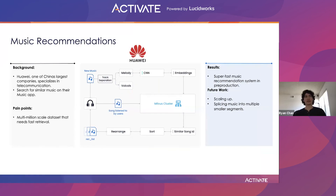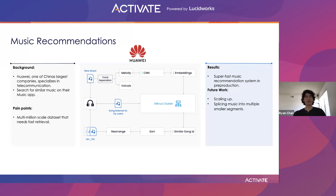Another interesting use case for Milvus is music recommendations. The first step for encoding a song is to separate the background music and the vocals, done using techniques such as audio source separation. The next step is to get embeddings built from the background music. Background music is used due to having more information about the song and to avoid misclustering from cover variations with different vocals. With these embeddings stored in Milvus, we can search the current song a user is listening to in order to find similar songs. You can sort the results or do some post-processing to give a similar but not identical song, and this can be used both as a recommendation system or as a search system.